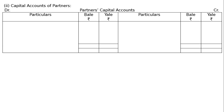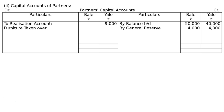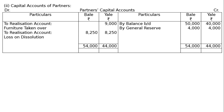Now the capital accounts for Bale and Yale. By Balance Brought Down: Rs. 50,000 for Bale and Rs. 40,000 for Yale. By General Reserve: Rs. 4,000 each — they are equal partners. To Realization Account for furniture taken over Rs. 9,000. To Realization Account for loss on dissolution Rs. 8,250 each. Credit side totals: Rs. 54,000 for Bale and Rs. 44,000 for Yale. The difference paid through bank: Bale Rs. 45,750 and Yale Rs. 26,750.